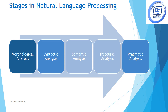Before answering those questions, let me just revise what is natural language processing. Natural language processing is the ability of a computer to analyze or understand human spoken languages, for example English or Hindi. Now this processing is done in many different stages. The first is morphological analysis. In morphological analysis, a stream of characters are divided into sentences and words. This is called tokenization. Also in morphological analysis we try to identify the root of the word by removing the suffixes in any given word.